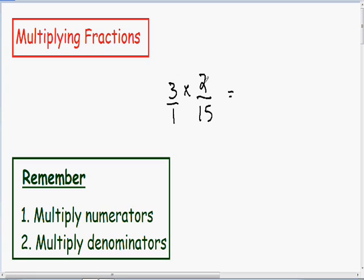The first thing I'm going to do is multiply our numerators together, 3 times 2, which is just 6. And now I'm going to multiply our denominators together, 1 times 15, which is just 15.